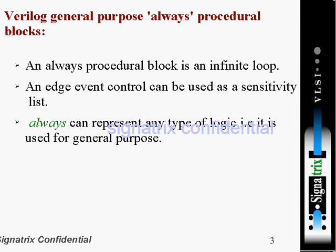An always procedural block is an infinite loop. If you are using always with a = b, that means an infinite loop. If you are using always with a sensitivity list and assigning procedural statements, then based on the sensitivity list it will execute those statements. An edge event control can be used as a sensitivity list. Always can represent any type of logic — combinational logic, sequential logic, or latched logic — so it is a general purpose procedural block.